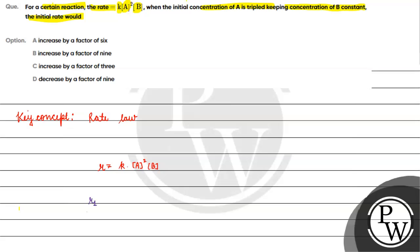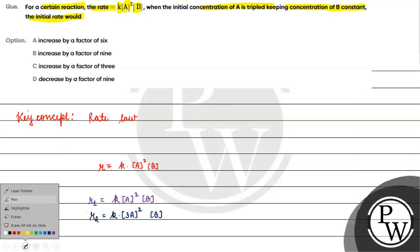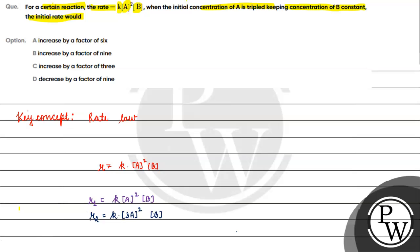Suppose R1 लेकते हैं — R2 अगर हमें इतना हो, क्या हो जाएगा? Rate constant into concentration of A को अगर हमें triple कर दे, raised to the power 2 into concentration of B — क्योंकि उसका हमें constant रखना है. R1 by R2 क्या आजाएगा?